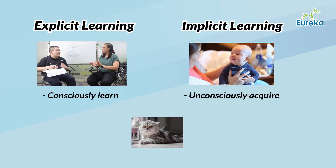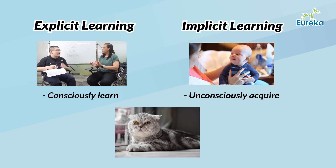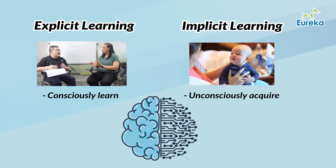For example, 'big fat cat' sounds far more natural than 'fat big cat' to us. We know this intuitively from being repeatedly exposed to this order, not because we learned some grammar rule. So far, research seems to indicate that knowledge learned implicitly or explicitly lights up different parts of our brain and are mostly separate systems.